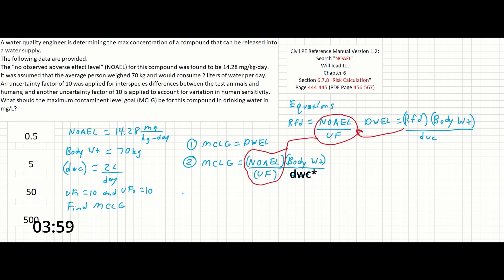Now all we have to do is plug in our givens and solve the problem. So MCLG is going to be 14.28 mg per kg day times 70 kg